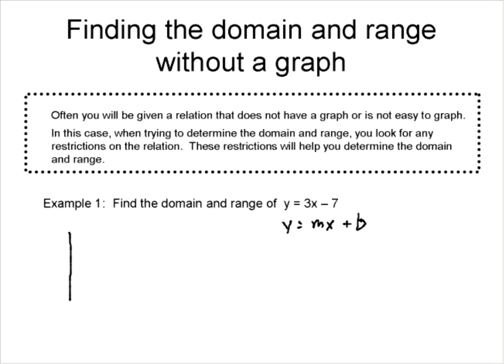If you think about what any line looks like, on this one I could just do a little sketch of what the graph would be. If we're at negative 7 and we have a slope of 3, we've got a line that looks something like this. Is there any value for X that wouldn't work? No. Is there any value for Y that wouldn't work? No. So in this case — and this is true for all linear functions — the domain is all real numbers and the range, as well, is all real numbers. Linear function: there are no restrictions, so the domain and range are just all real numbers. Any value is allowed.